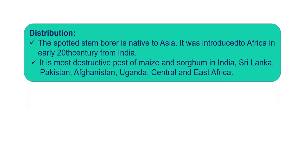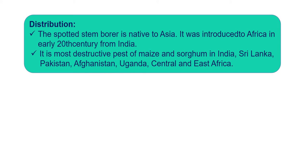The Spotted Stem Borer is native to Asia and was introduced to Africa in the early 20th century from India. After arriving in Africa it spread widely to many countries. It occurs in low to mid altitude areas. It is the most destructive pest of maize and sorghum in India, and is also found in Sri Lanka, Pakistan, Afghanistan, Uganda, and Central and East Africa.